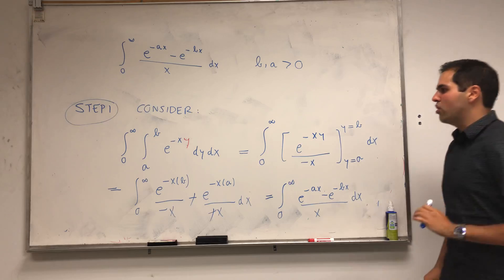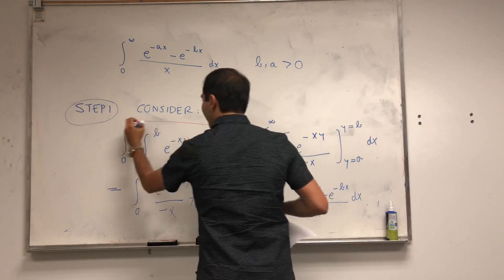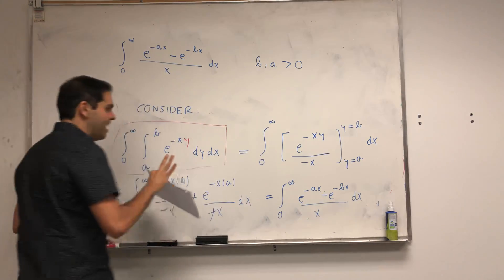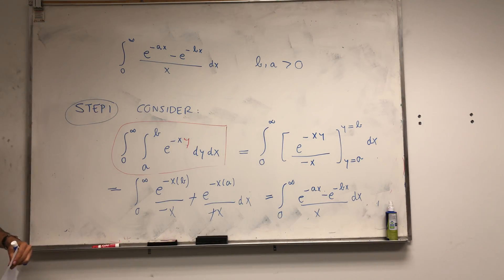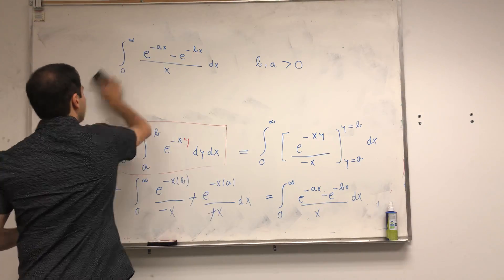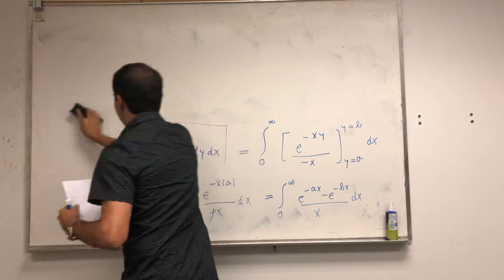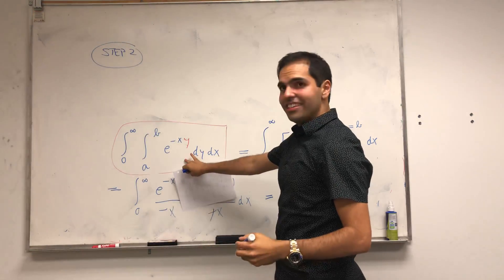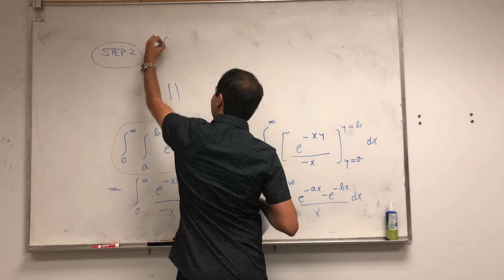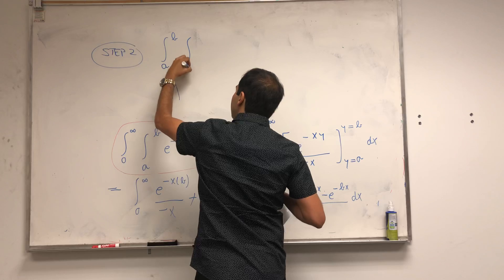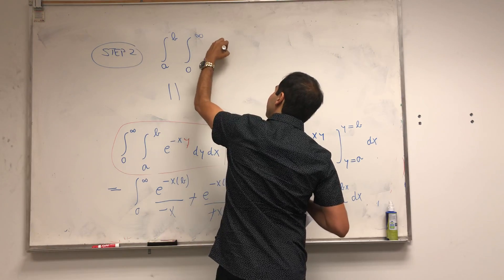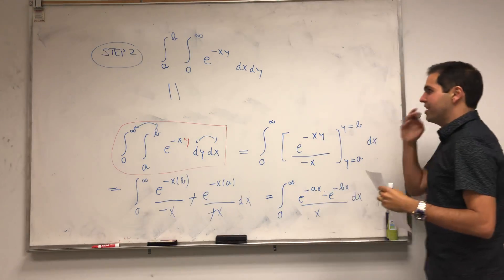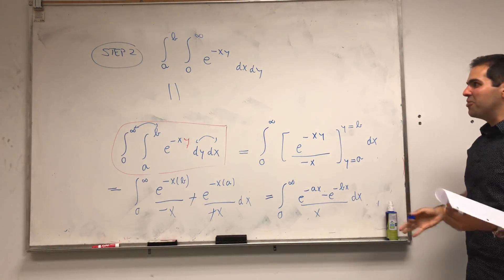The key to solving our problem is to evaluate this double integral in another way. You may notice I have dy dx — why not dx dy? This interchange is precisely the key, and it's called Fubini's theorem in multivariable calculus. So step two: this integral also equals the interchanged version — integral from a to b, integral from 0 to infinity of e^(-xy) dx dy.